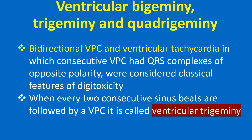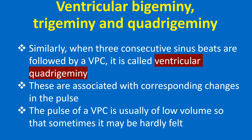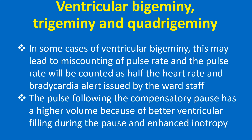When every two consecutive sinus beats are followed by a VPC, it is called ventricular trigeminy. When three consecutive sinus beats are followed by a VPC, it is called ventricular quadrigeminy. These are associated with corresponding changes in the pulse. The pulse of a VPC is usually of low volume so that sometimes it may be hardly felt. In some cases of ventricular bigeminy, this may lead to miscounting of pulse rate — the pulse rate being counted as half the heart rate and a bradycardia alert issued by the ward staff. The pulse following the compensatory pause has a higher volume because of better ventricular filling during the pause and enhanced inotropy.